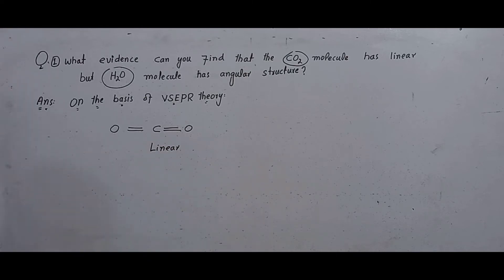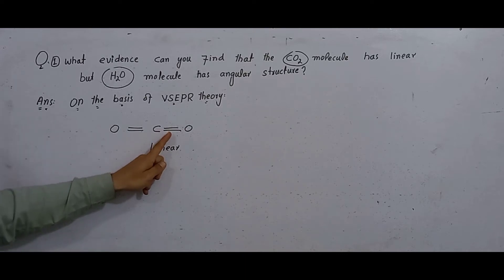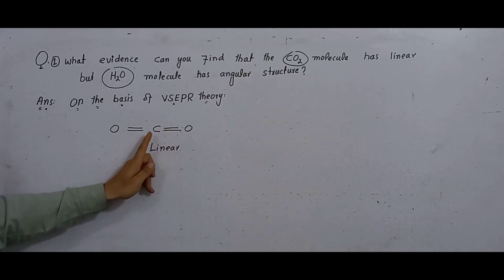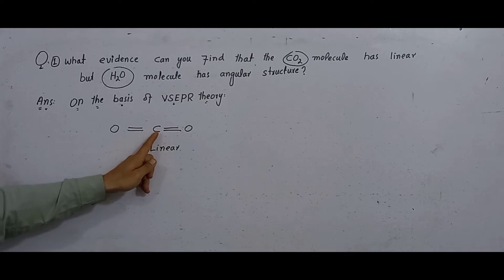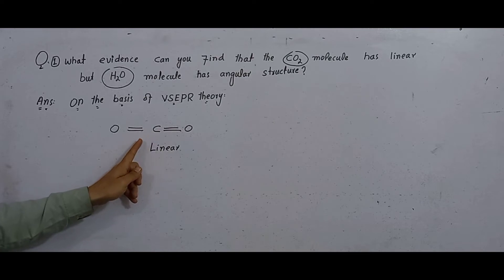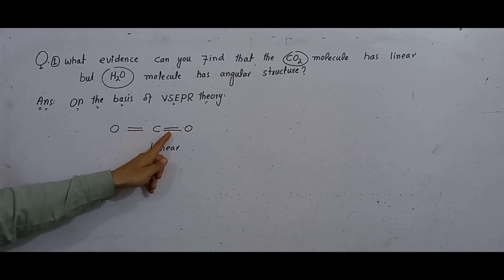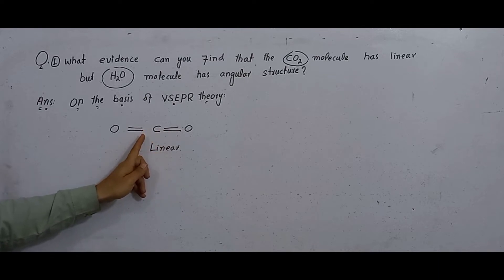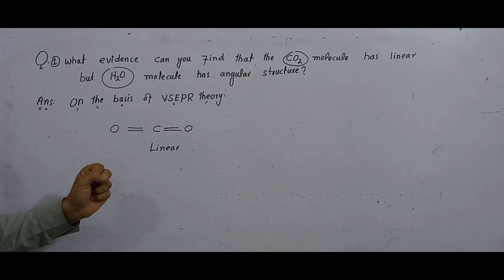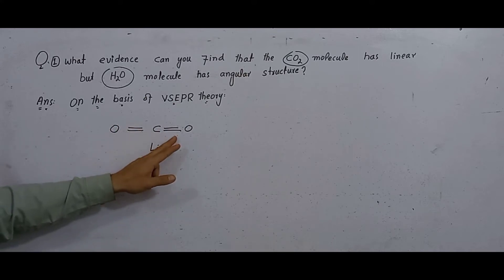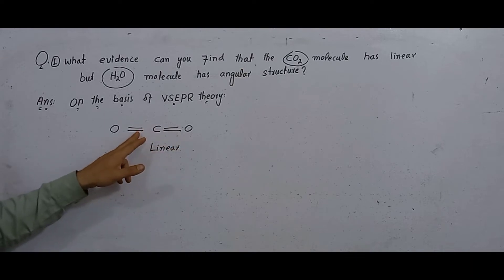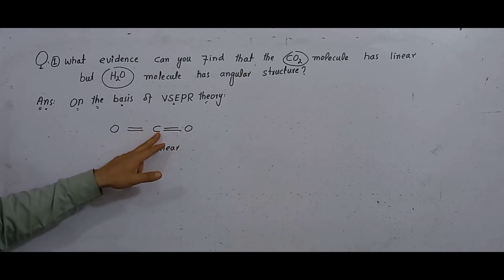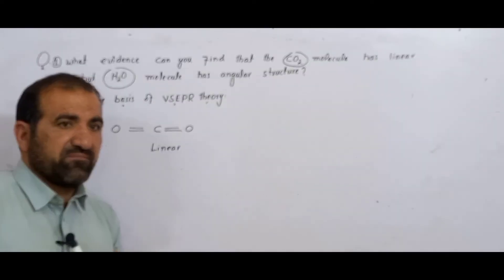According to VSEPR theory, these bond pairs arrange themselves around the central carbon atom in such a way that the distance between these electron pairs is maximum, to have minimum repulsion. As a result, both bond pairs occupy the opposite sides of the carbon, giving a bond angle of 180 degrees and a linear structure.